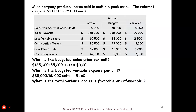When we break down between the volume variance and other variances, our total should equal $7,500, meaning we were over by $7,500. Since we had more sales than expected, that's favorable. Sales revenue being higher is favorable. Variable costs being higher is unfavorable — whenever costs are higher it's unfavorable. Fixed costs being higher is also unfavorable, but in total we are favorable.